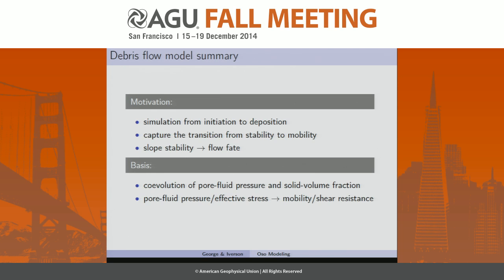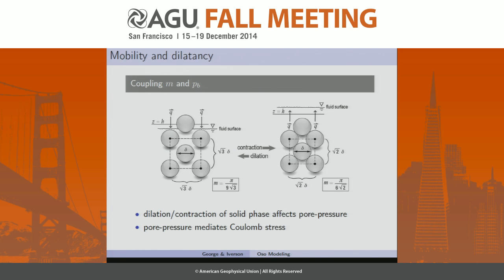We know that a mass might fail, but then what's going to happen — will it have a large degree of runout or will it stabilize? The way we've tried to accomplish this in the model is by having this co-evolution of the pore fluid pressure and the solid volume fraction, which are tightly coupled in a feedback mechanism. The pore fluid pressure and effective stress evolve and that changes the shear resistance — we use an effective stress principle where Coulomb friction is mediated by the pore fluid pressure. As material begins to shear, either the strength goes up and it stabilizes, or the friction goes down and we get large runout. If we have looser material, as it shears it might contract, which drives up the pore pressure; if we have slightly denser material, as it shears it would tend to dilate and drive down the pore fluid pressure, increasing frictional resistance.